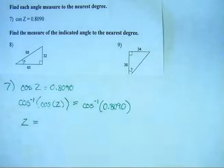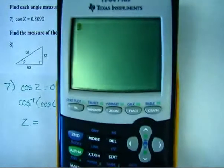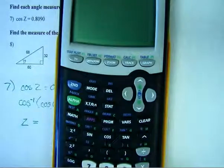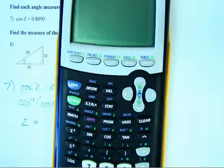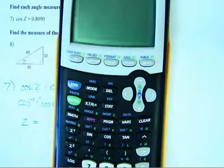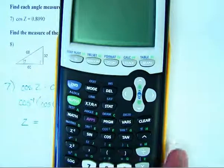And then to calculate the inverse cosine, all I have to do is take a handy dandy calculator. And you'll notice written in blue above cosine is the inverse cosine. So if I hit second, cosine, the calculator will bring up the inverse cosine.